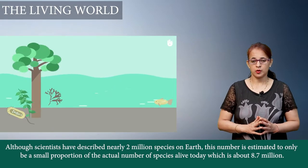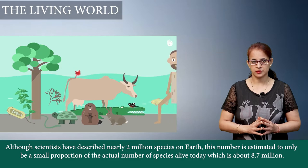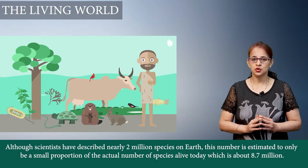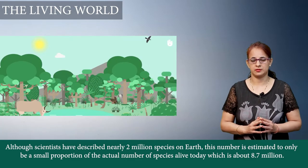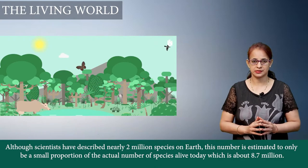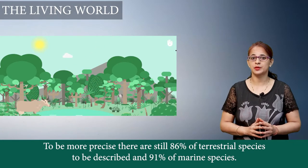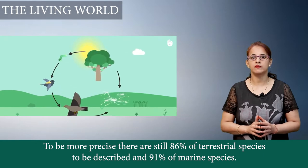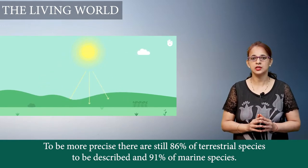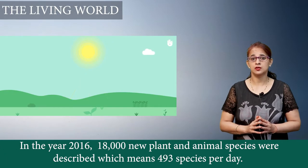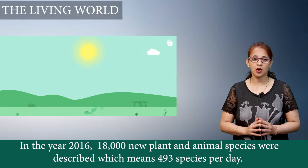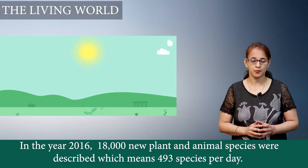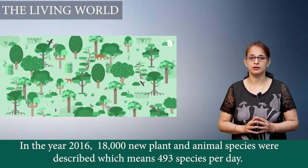If I talk about the living organisms on the surface of earth, there are around 8.7 million species, and just 2 million species have been described up till now by scientists. To be more precise, 86% of the terrestrial species are yet to be described and 91% of the marine species are yet to be known. In the year 2016, 18,000 species of plants and animals were described — approximately 493 species per day.